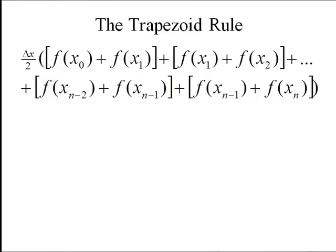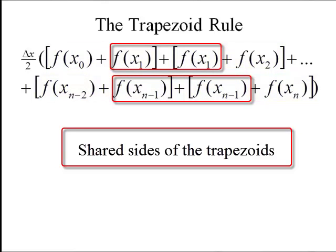So what we see here is we have delta x over two factored out, and then in the brackets we can see the bases of each trapezoid. Notice the overlap. We're going to combine those to get a nice condensed trapezoid rule.